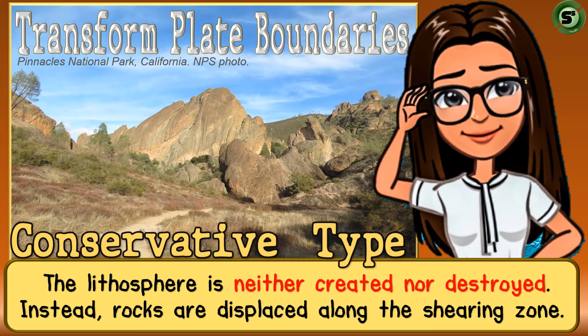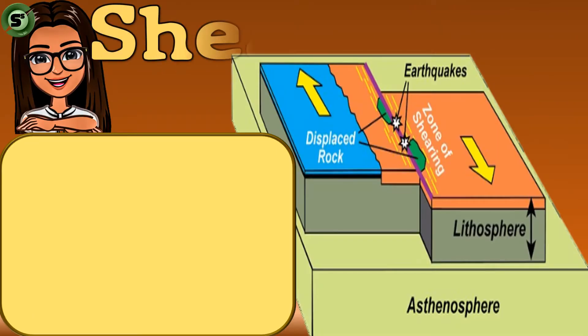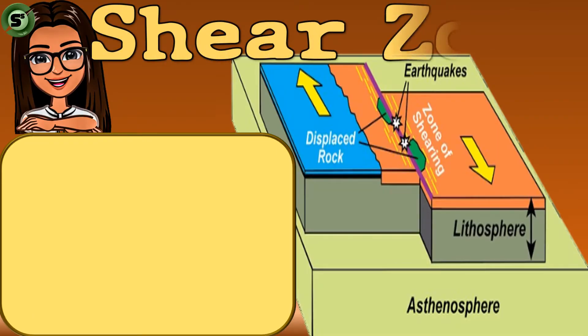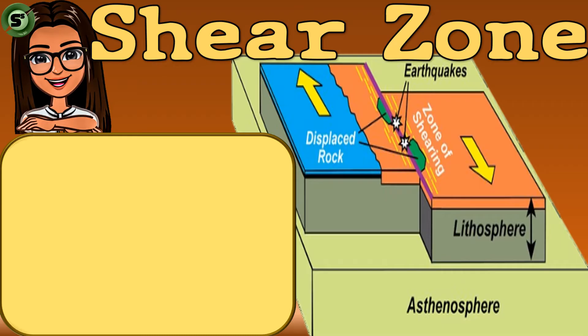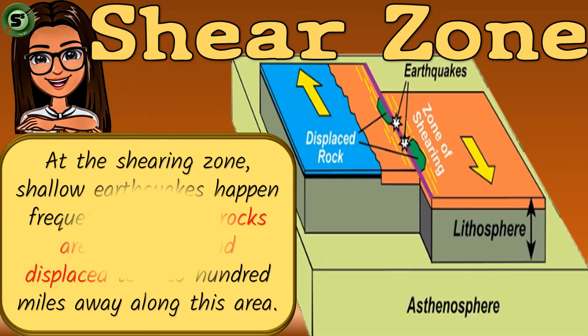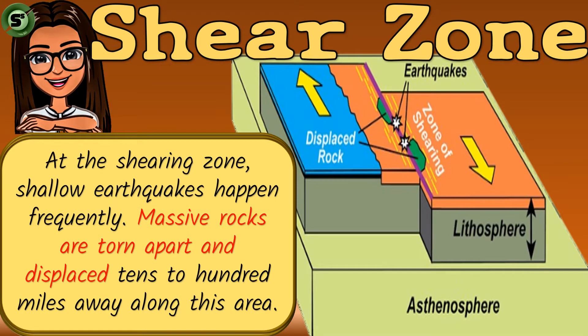This picture shows the displaced rocks at Pinnacles National Park, California. At the shearing zone, or where the plates glide against each other, shallow earthquakes happen frequently. Massive rocks are torn apart and displaced tens to hundreds of miles away along this area.